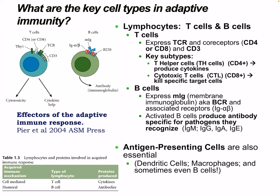T cells express the T cell receptor, and are either CD4 (T helper) or CD8 (cytotoxic T lymphocyte), with all T cells expressing CD3. T helper cells produce cytokines, which are communication molecules, while cytotoxic T cells kill specific target cells. B cells express membrane immunoglobulin — the B cell receptor — with associated molecules Ig-alpha and Ig-beta always attached. Activated B cells produce antibodies specific to the pathogens they recognize, including IgM, IgG, IgA, IgE, and IgD.